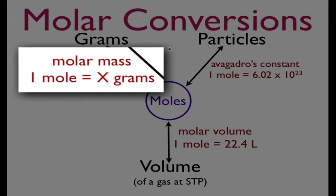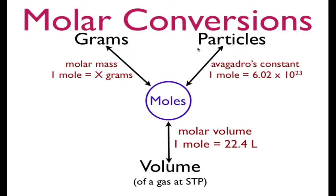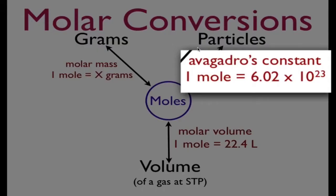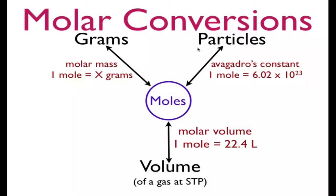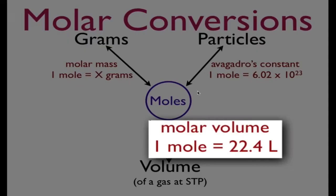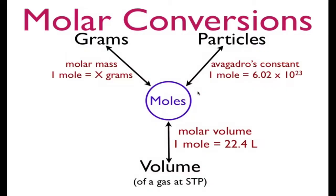We can convert very easily between particles and moles through Avogadro's constant, because one mole of a substance is equal to 6.02 times 10 to the 23rd particles — meaning molecules, atoms, ions, or something like that. And the volume of a gas at standard temperature and pressure is related to the mole through its molar volume, because one mole of any gas at standard temperature and pressure has a volume of 22.4 liters.